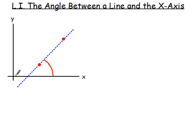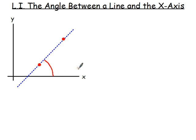If you imagine the numbers on the x-axis — one, two, three, four, five — the further over to the right you go, it's going to be positive numbers. So this is the positive direction of the x-axis, and it's this angle that we want to find.